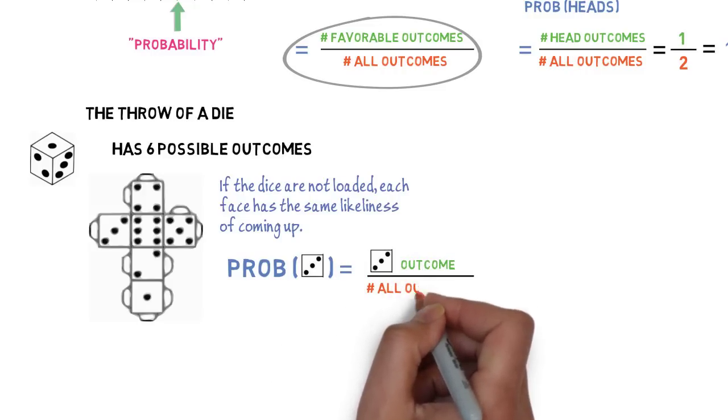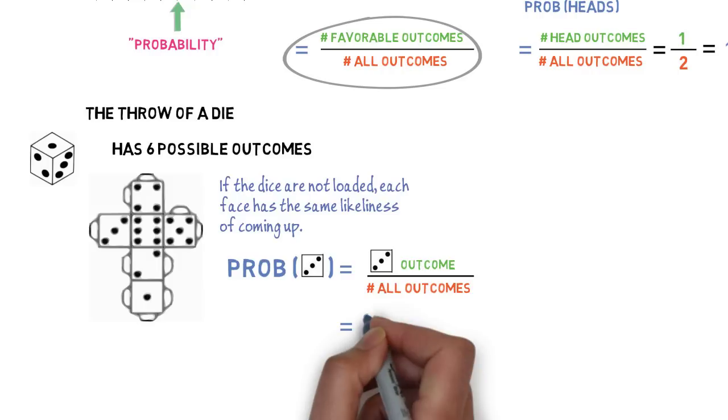The number of outcomes for a given face equals one. The total number of outcomes is six. So, the probability of each face equals one-sixth, or 17%.